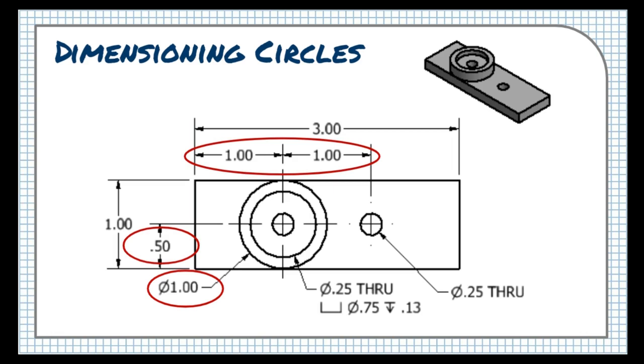Hole information should be given using hole notes, which communicate lots of information about the hole in a single dimension, such as its size, its depth, and whether it has a counterbore, countersink, or threads. I talk a lot more about this in my lesson on holes and hole notes, so if you want to learn more, check out that video.